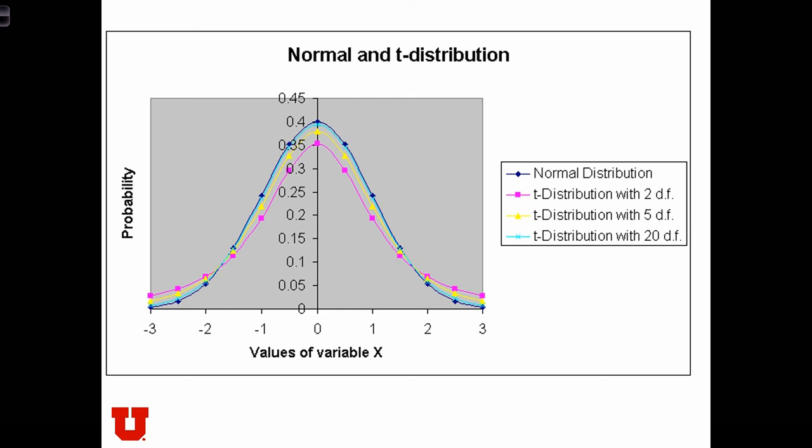Here we see a picture of the standard normal distribution in blue on the outside there. And let's compare that to a t-distribution with 2 degrees of freedom. We see that the t-distribution is flatter over here. It's less peaked than the normal distribution.